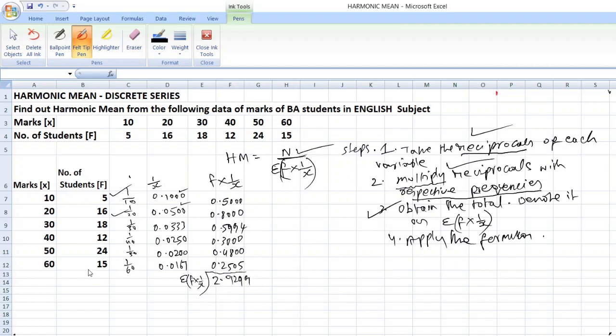And you should also find out n. What is n? N is equal to 90. Okay students. You got two items. N you got. That is equal to 90. Right. N is equal to 90. Summation f into 1 by X is equal to 2.9 2 double nine.